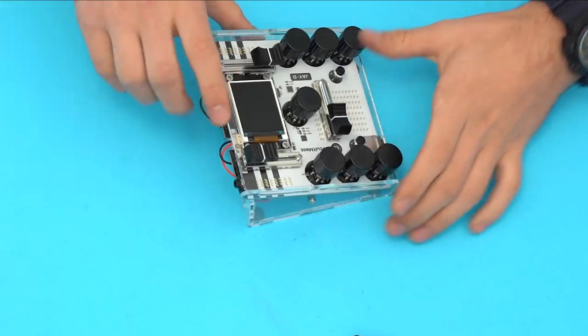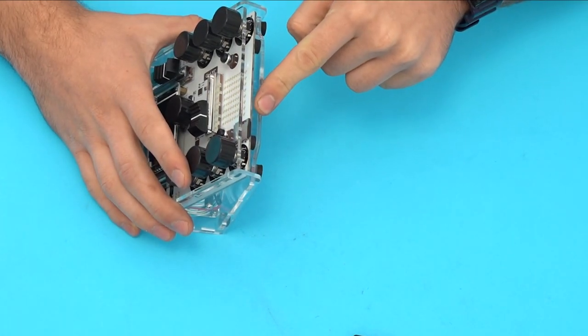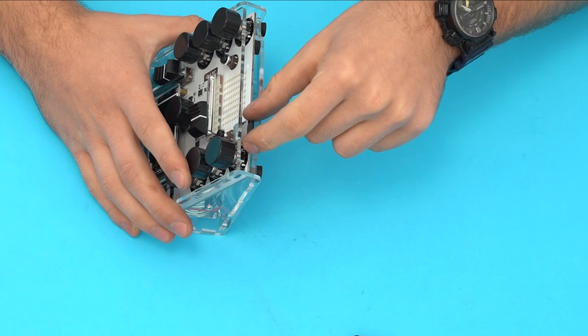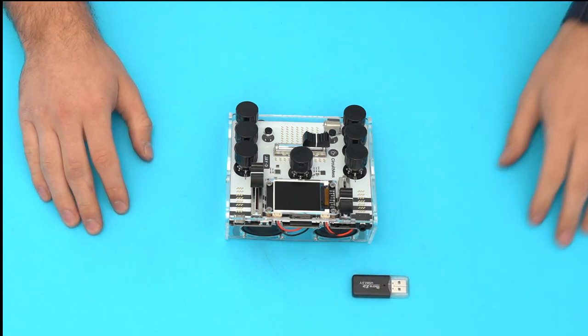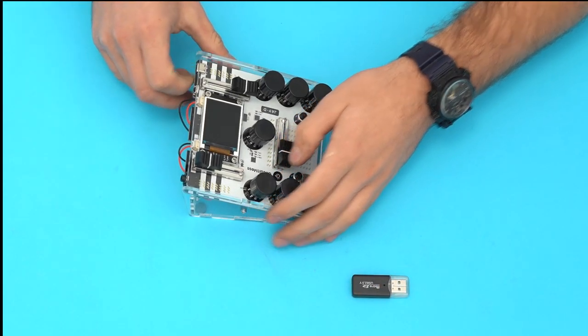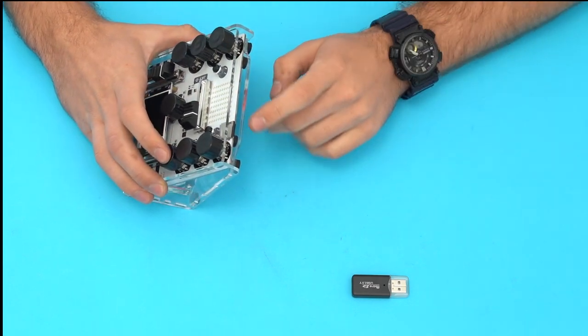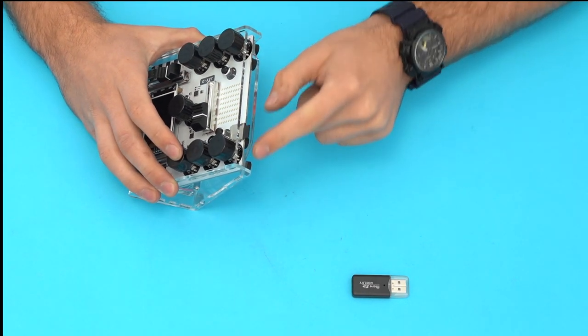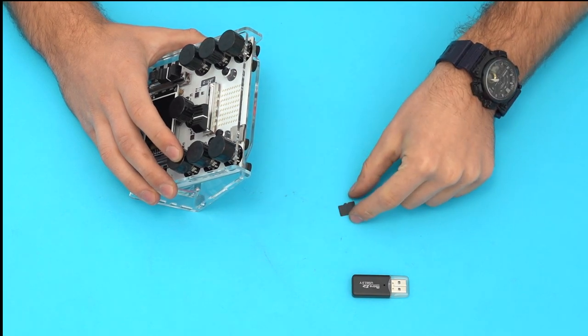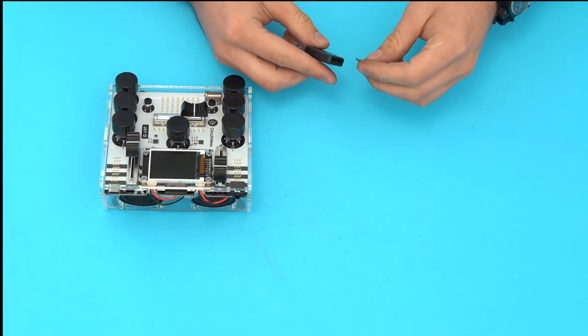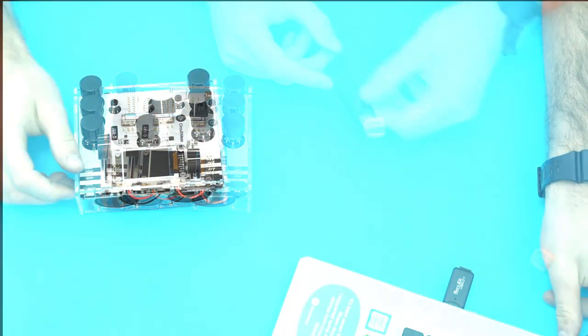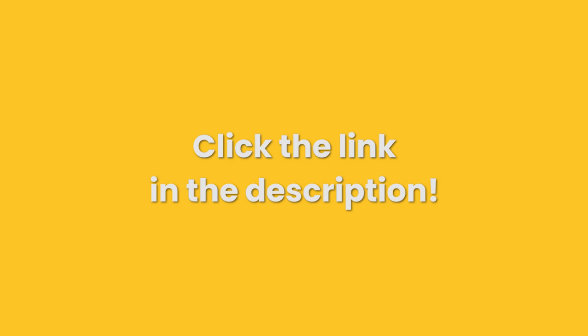The JD comes with an SD card preloaded with tons of cool tracks just waiting to be remixed. But in case you want to mix your own songs, do the following. Take the SD card reader included in the box. Now eject the SD card on the bottom side of your JD. Insert the SD card into the reader. Take off the plastic cap and plug it into your computer. We have a guide linked in the description on how to transfer music to your JD. So make sure to check that out.